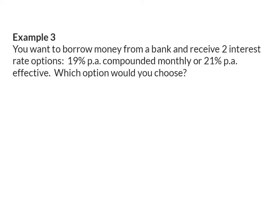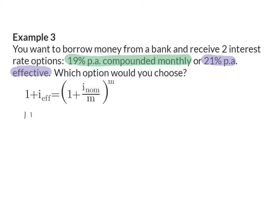Example 3: You want to borrow money from a bank and receive two interest rate options — 19% per annum compounded monthly, or 21% per annum effective. Which option would you choose? We can only compare these two options if they are expressed in the same way. The 21% is already the effective rate. So I will convert the 19% compounded monthly to an effective rate. The nominal rate is 0.19, compounded monthly, so we divide by 12 and use an exponent of 12.